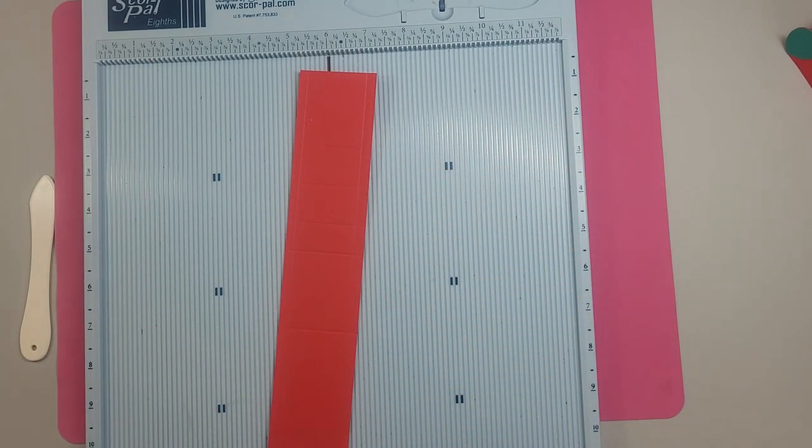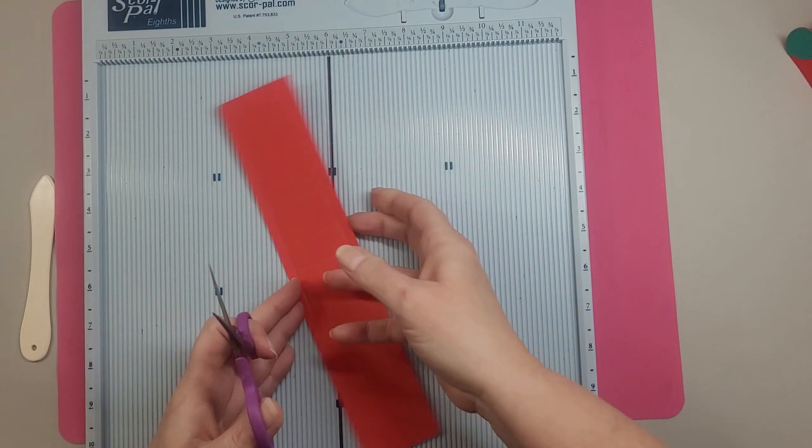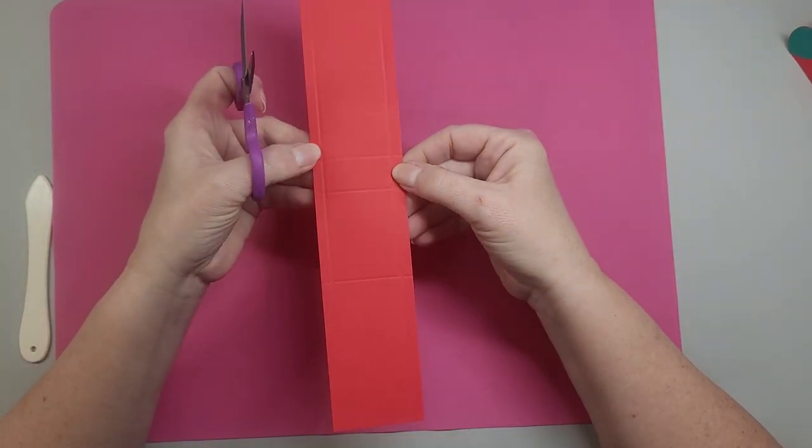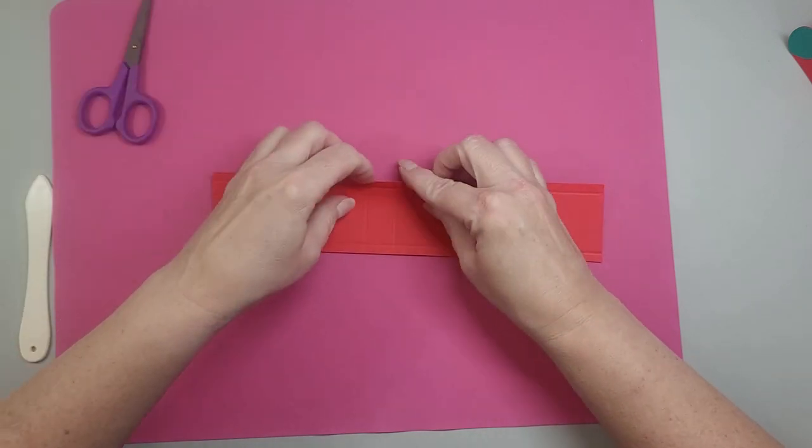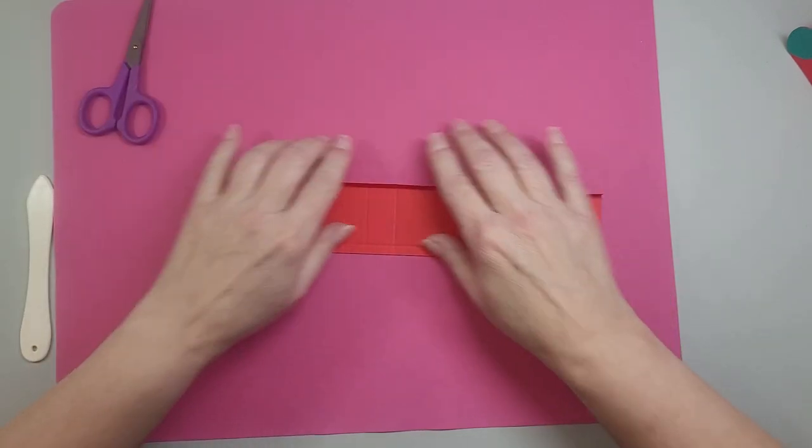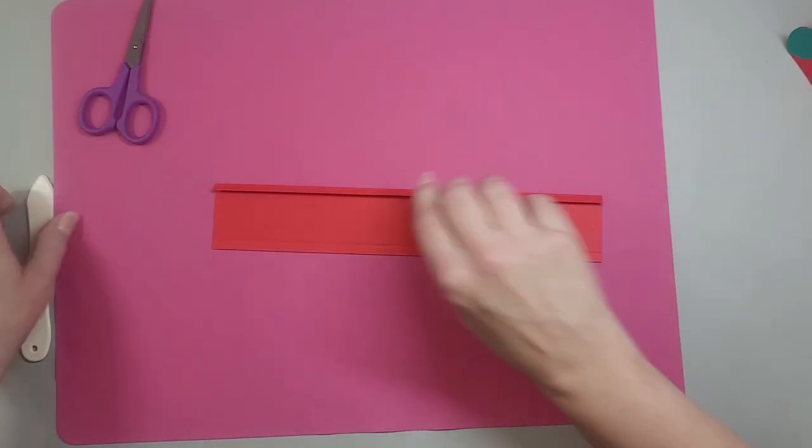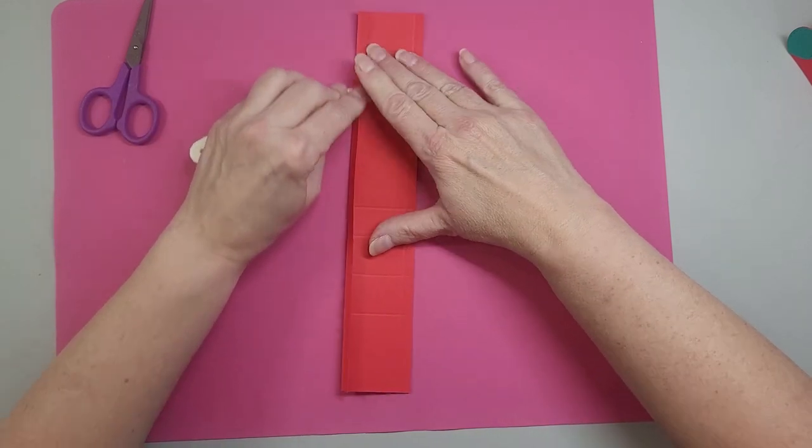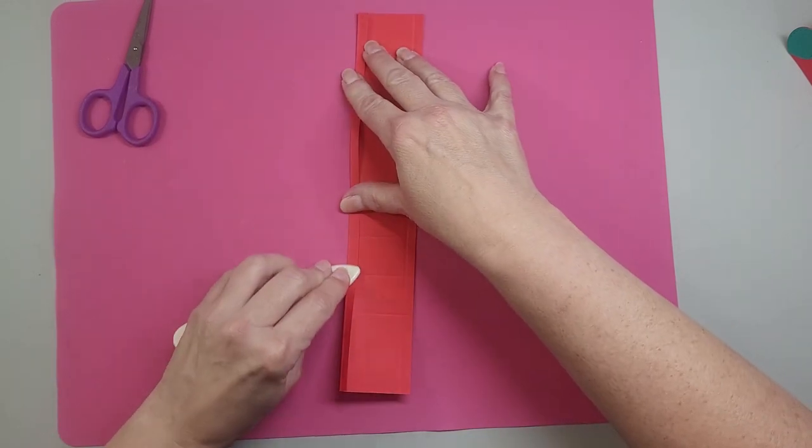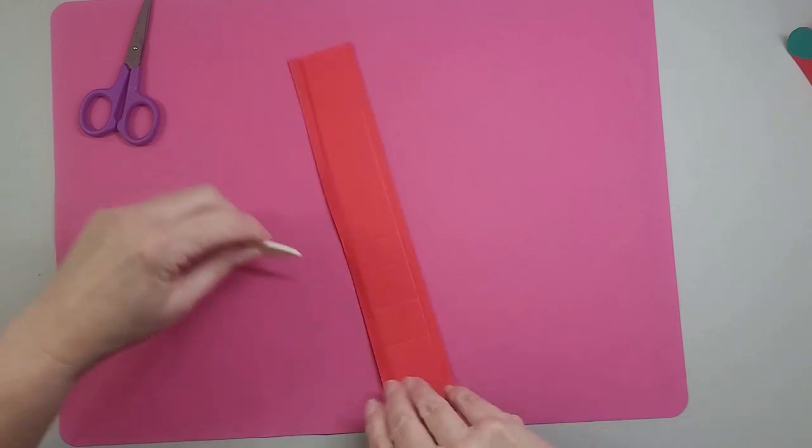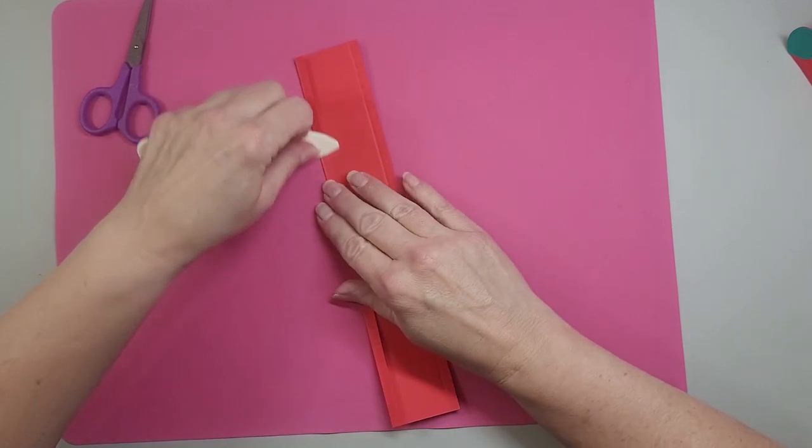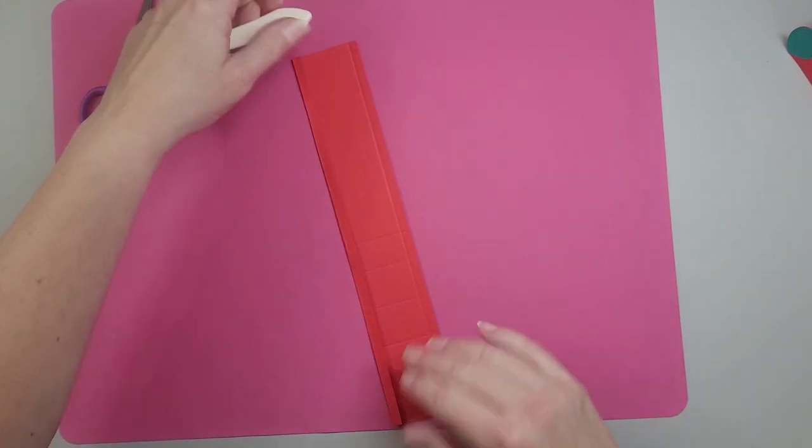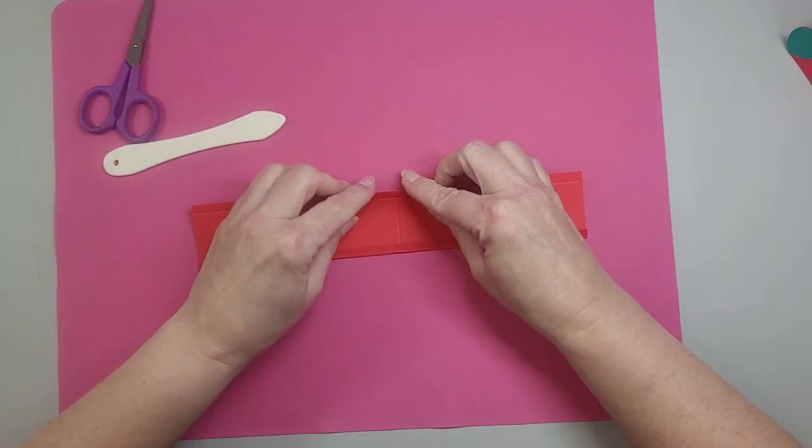So let me grab my scissors. So now let me get this out of the way. We're done with that. So now we can see the score lines. So I'm going to go ahead and score this first. We're going to fold this down.